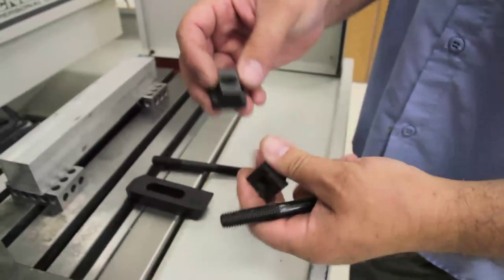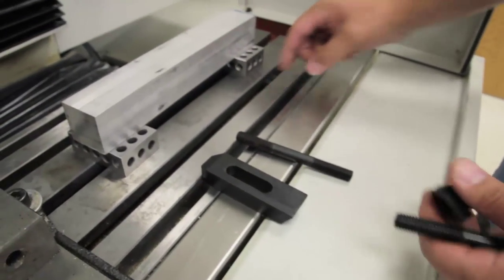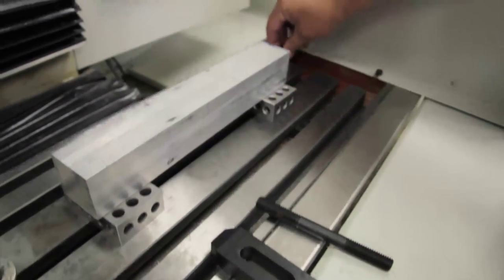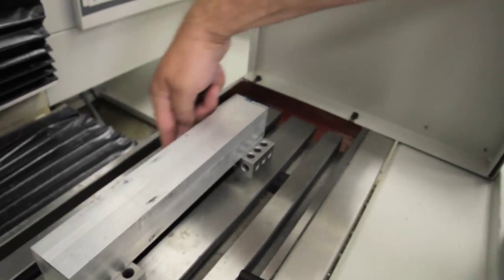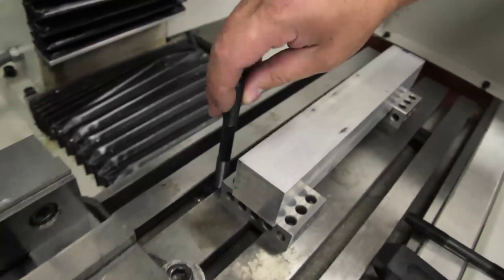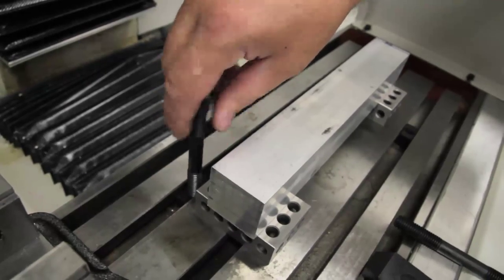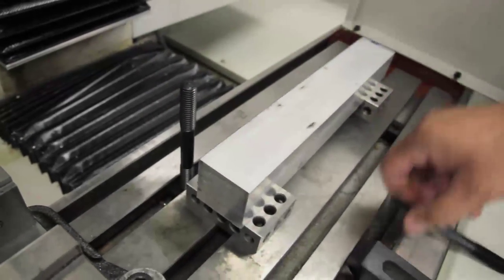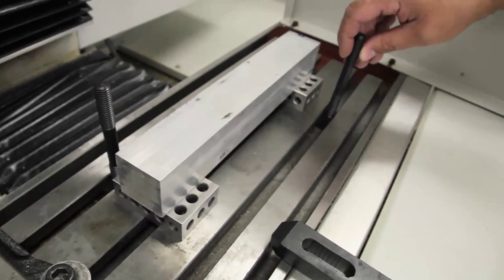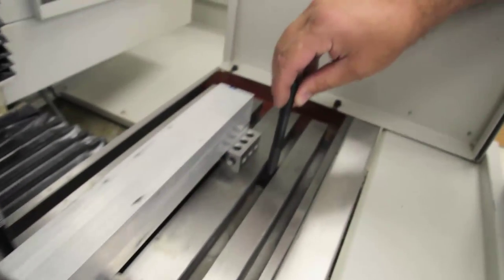The T-nuts slide into the T-slot on the table. Position them so you're clamping down on top of your work piece and whatever you're using to hold the block up, whatever you're supporting your work piece with.